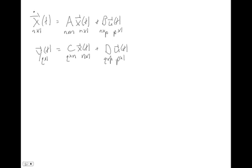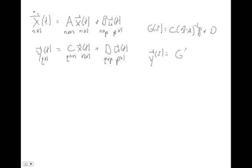We saw previously that if we have a state space formulation like this, we can always turn this into a transfer function matrix, where our transfer function matrix G of S will look like C times SI minus A inverse B plus D, where this G is our mapping from our outputs to our inputs. Basically we have that Y of S is equal to G of S times U of S. U is a p by 1 thing and Y is a q by 1 thing, so G of S is a q by p transfer function matrix full of scalar transfer functions.